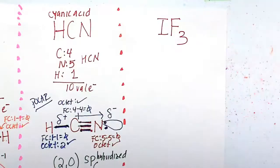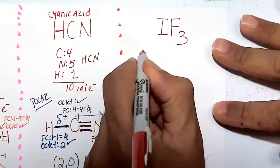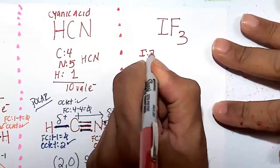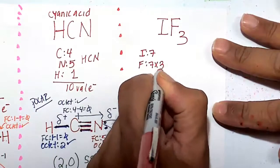Let's do the Lewis structure of iodine trifluoride in this video. Iodine, as all halogens are, is happy at 7 valence electrons. Fluorine is also happy at 7, but we've got 3 of them.